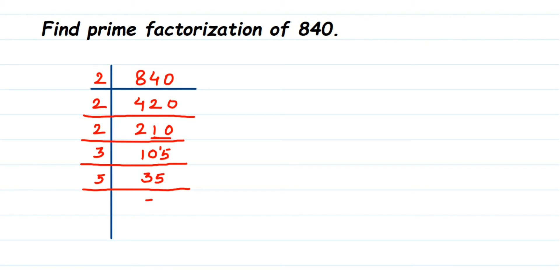35 doesn't go in 3, so I'm going to take 5. 5 7s are 35 and then 7 1s are 7. So you can see here that all the factors I got are the prime numbers. So you should always divide with prime numbers.